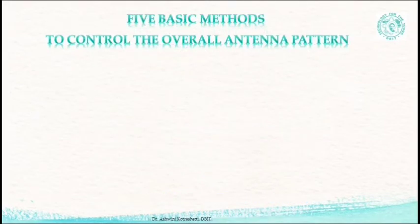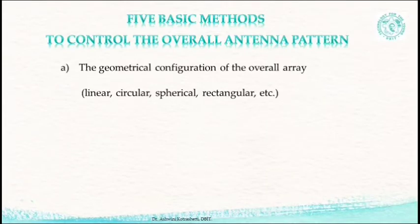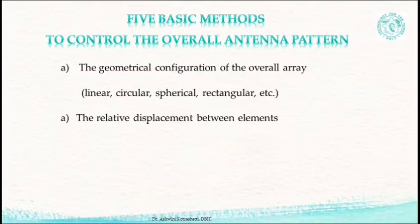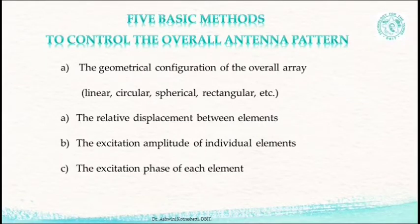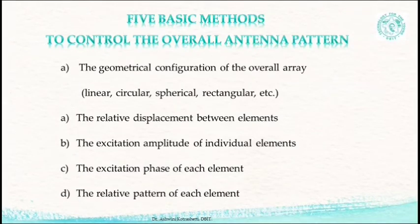In an array of identical elements, there are five controls that can be used to shape the overall pattern of the antenna. These are: the geometrical configuration of the overall array — it can be linear, circular, spherical, rectangular, etc.; the relative displacement between elements; the excitation amplitude of individual elements; the excitation phase of each element; and finally, the relative pattern of each element.